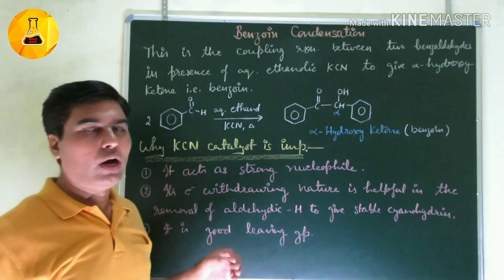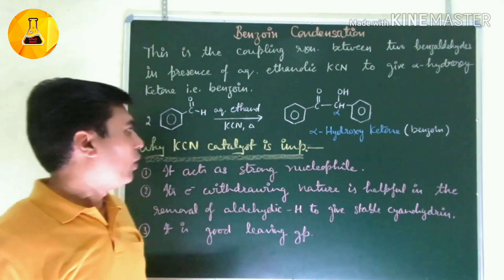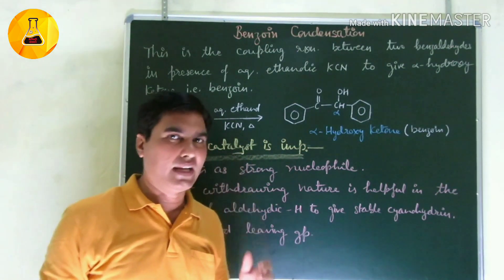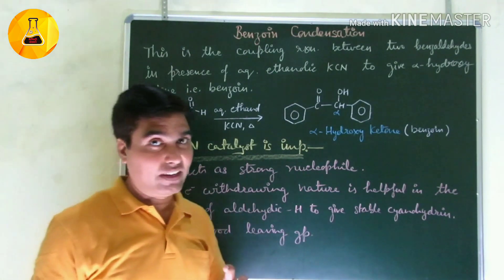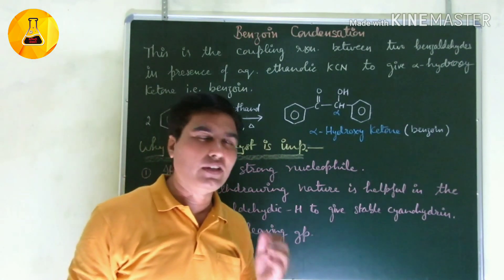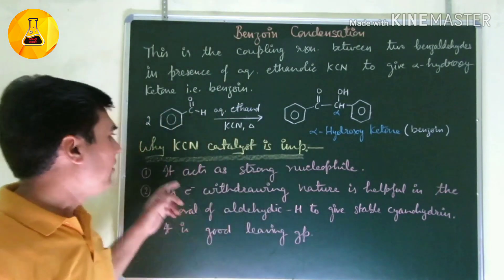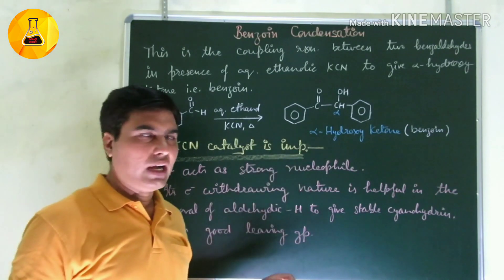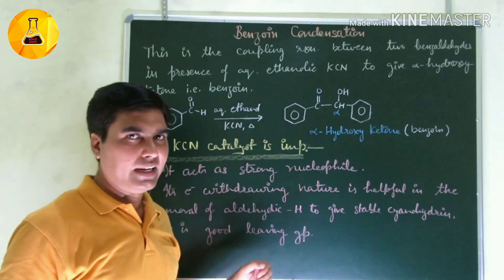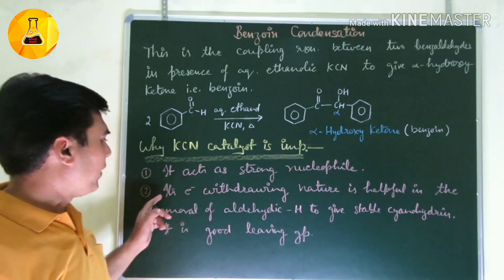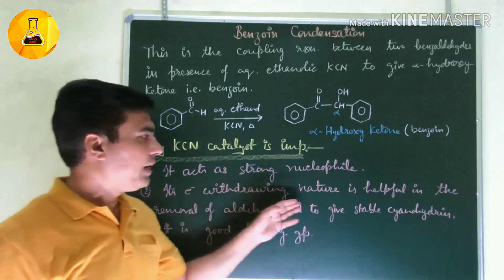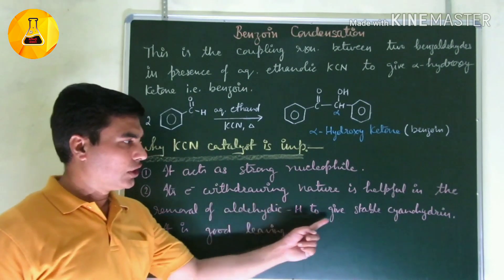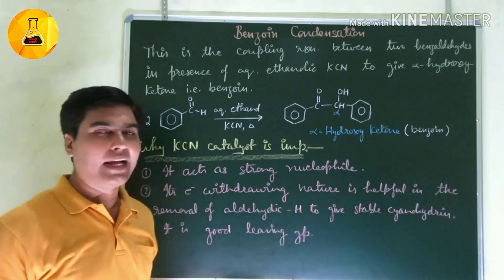When two aldehyde molecules join together, the question arises: why is KCN specifically used in this reaction? KCN is a specific reagent here and has no substitute. The first reason is that CN- acts as a strong nucleophile. Second, its electron withdrawing nature is helpful in the removal of aldehyde hydrogen to give a stable cyanohydrin.